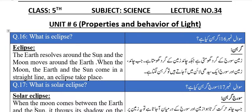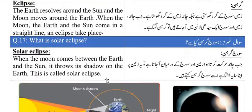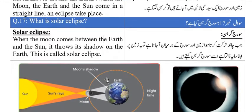The earth revolves around the sun and the moon revolves around the earth. When they come in a clear line, the sun appears and we can see the sun and the moon.